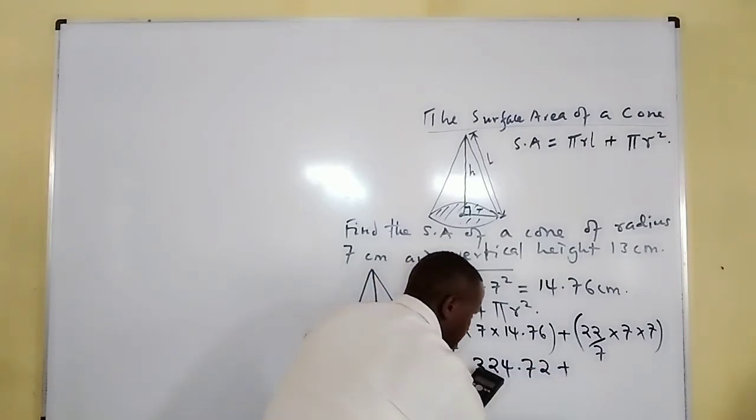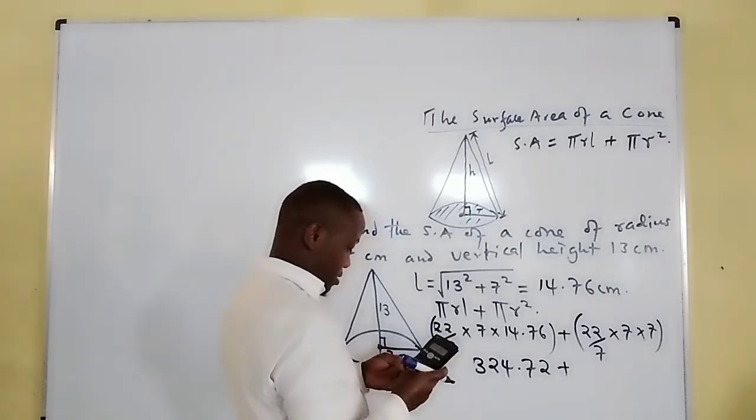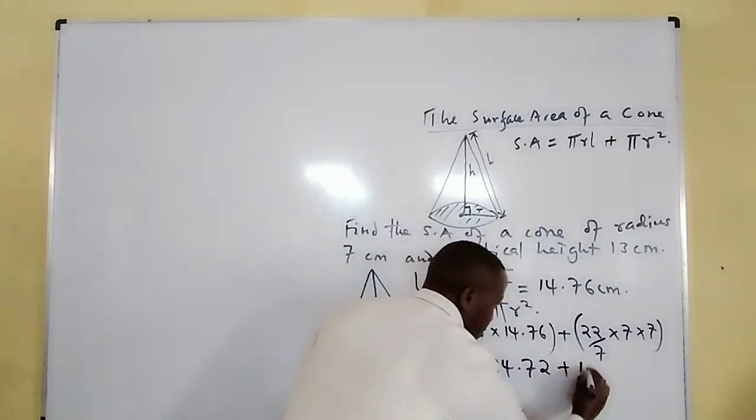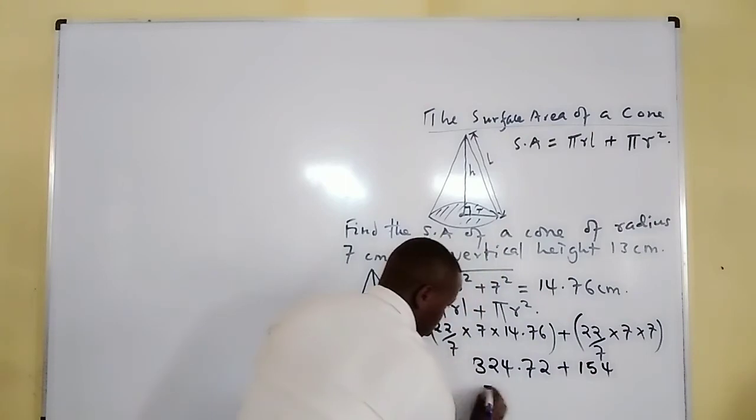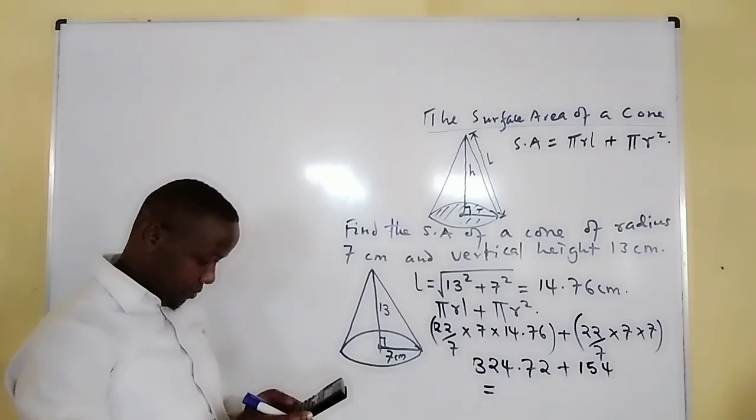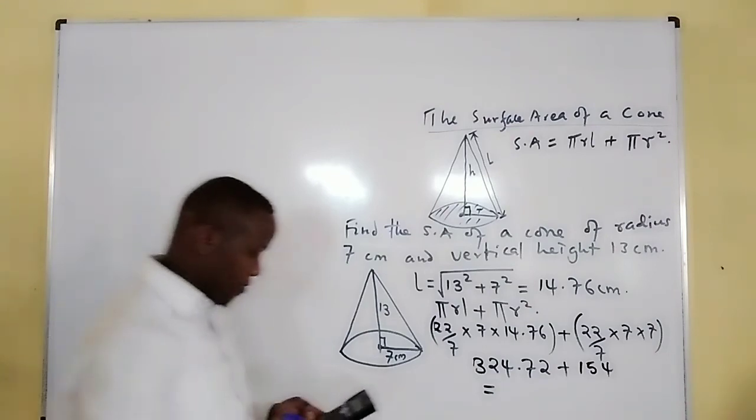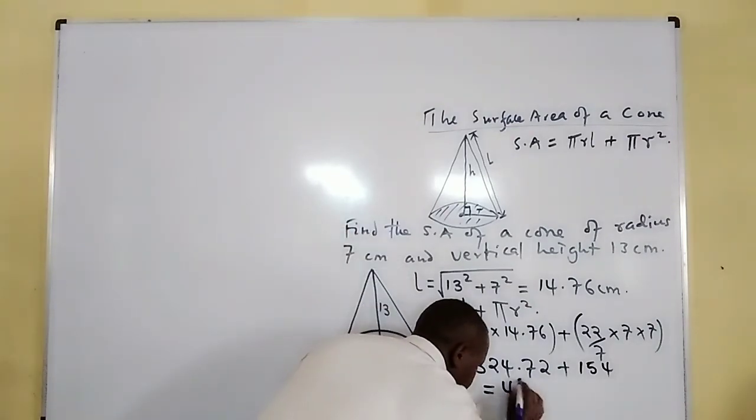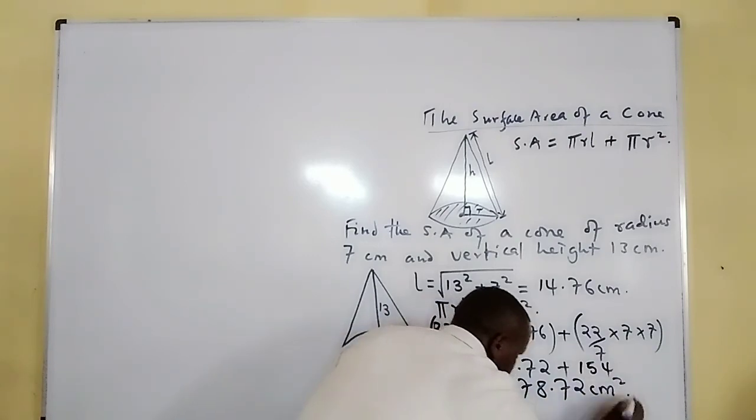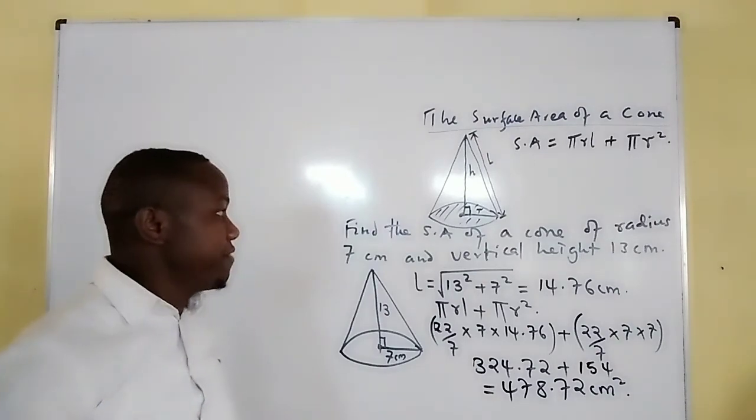plus 154. So the total surface area for such a cone will be 478.72 square centimeters. That is the total surface area for a cone.